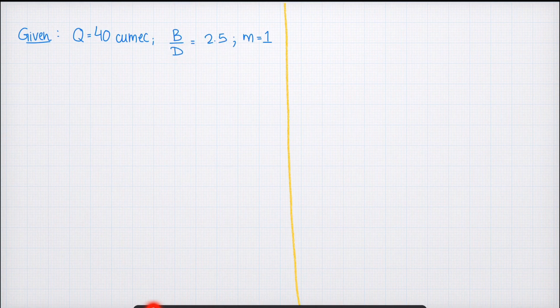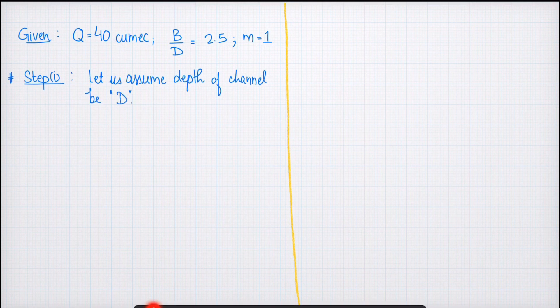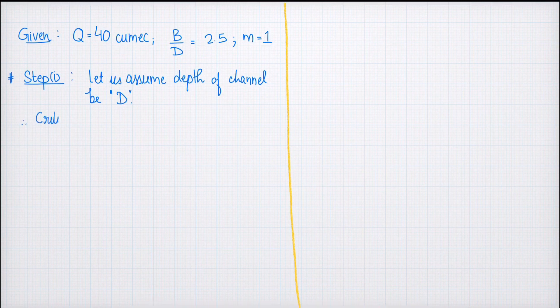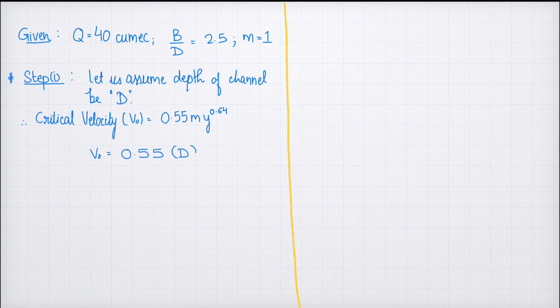Since we are given the restriction, instead of assuming a numerical value we will assume the depth to be d and proceed with the same design steps. Step one: assume the depth of the channel to be d. The next step is to find the critical velocity using Kennedy's formula. The critical velocity formula given by Kennedy is Vc = 0.55 × m × y^0.64. With m = 1 and depth = d, the critical velocity is 0.55 × d^0.64.